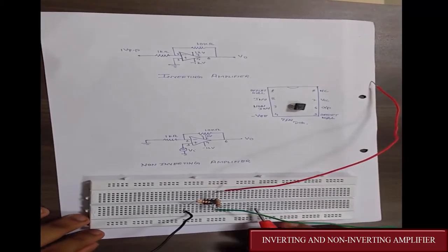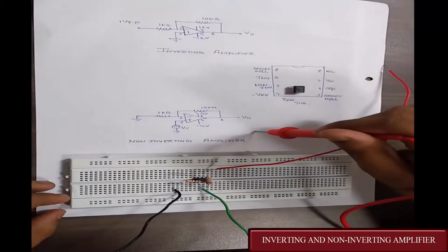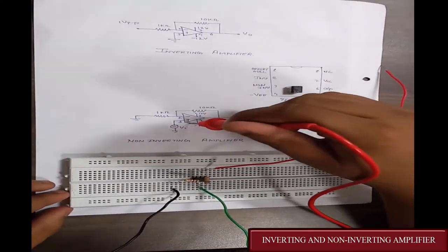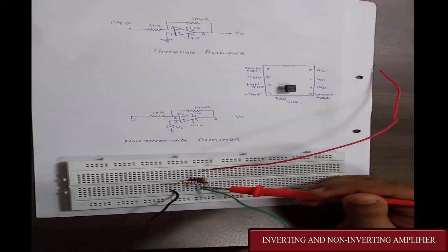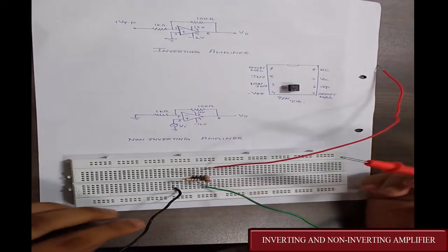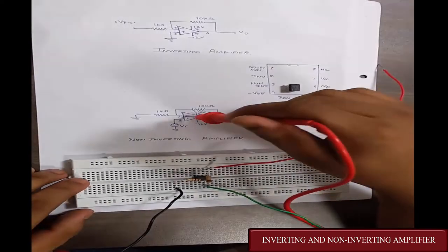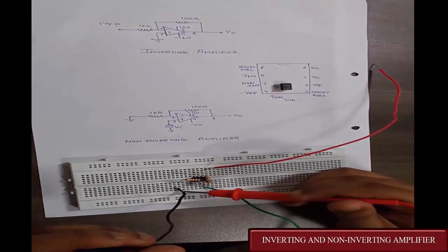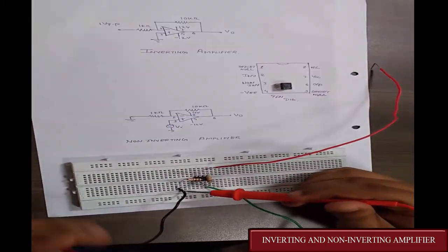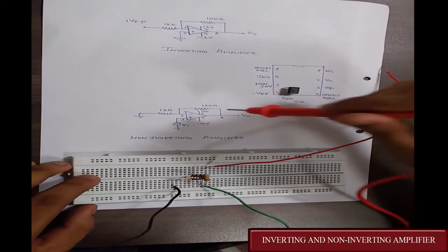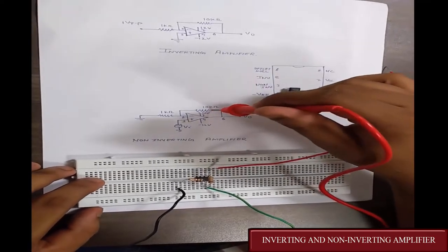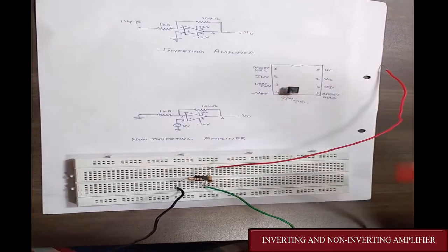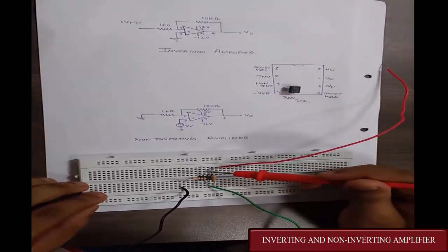This is the implementation of the non-inverting amplifier. In the non-inverting amplifier, the input is given at pin 3. This is the input wire. Pin 2 is grounded through a 1K resistor — this is the 1K resistor. And the feedback resistor is connected between pin 6 and pin 2.